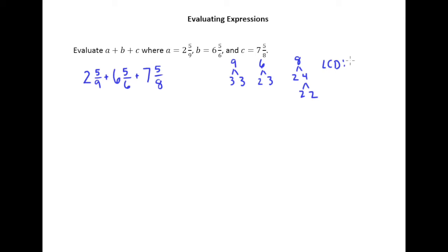And so that would mean that our LCD is just made up of 2s and 3s, but we've got, looks like we better use 3 factors of 2, because 8 has 3 factors of 2, and we better use 2 factors of 3, since 9 has 2 factors of 3. So 2 cubed is 8, 3 squared is 9, so it looks like 72 is the least common denominator.